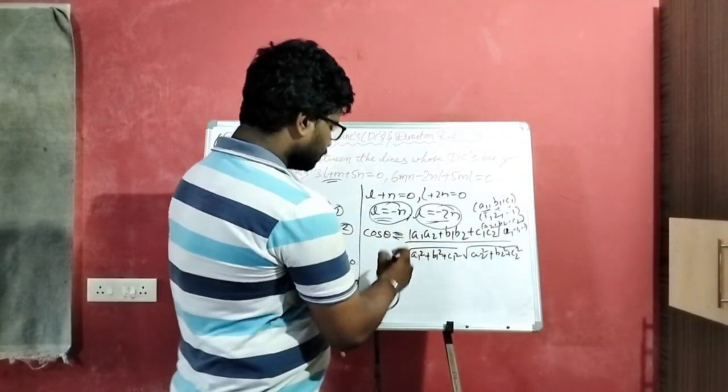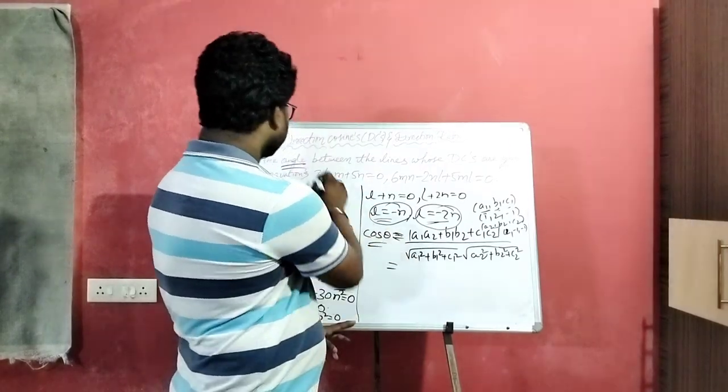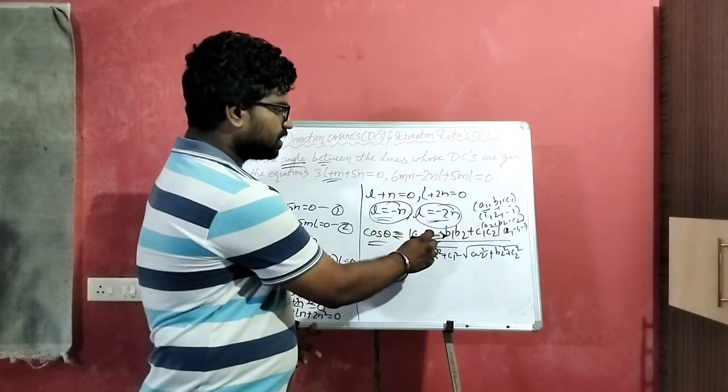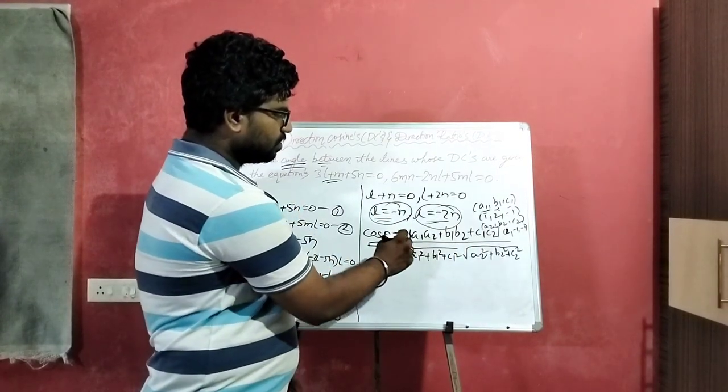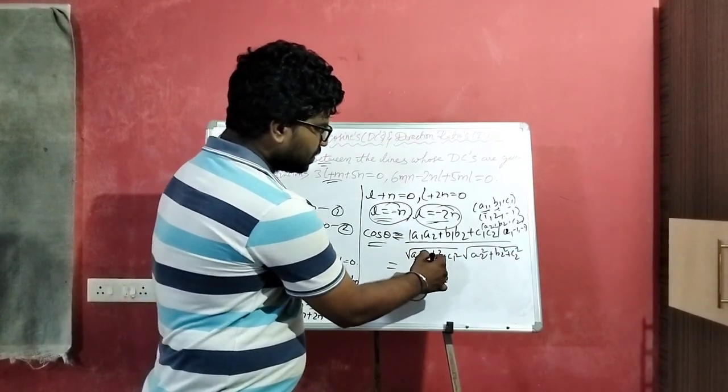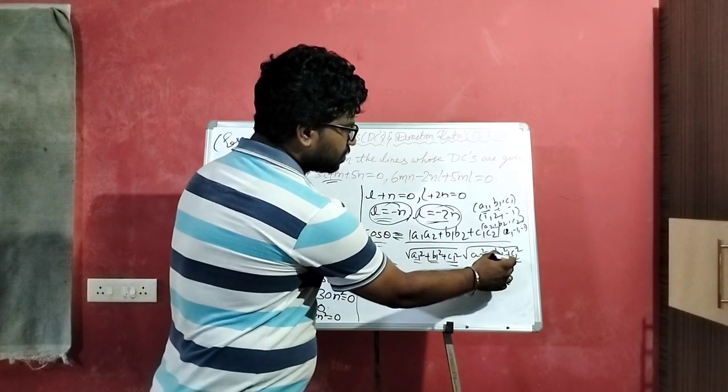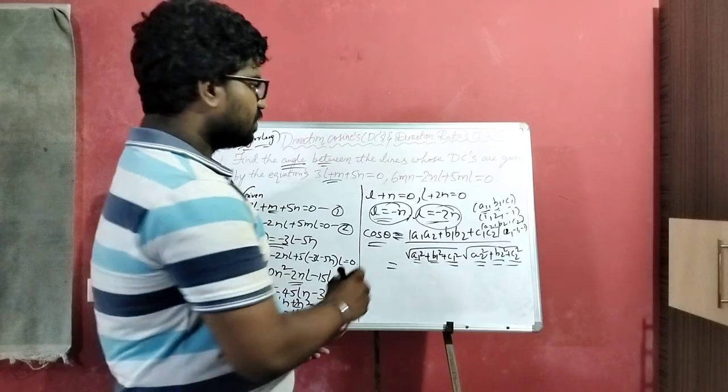And the second case is a2, b2, c2. Now we have to find the angle between the two. Cos theta is equal to a1a2 plus b1b2 plus c1c2 divided by root over a1 square plus b1 square plus c1 square into similar to a2 square plus b2 square plus c2 square.